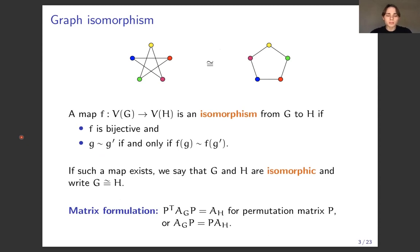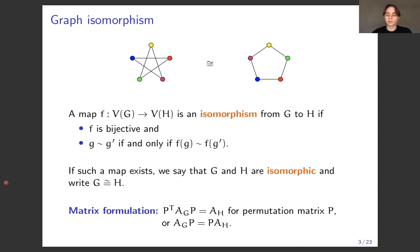We can also give a nice algebraic or matrix formulation for graph isomorphism in terms of the adjacency matrix of a graph. The adjacency matrix is a symmetric zero-one matrix where the UV entry is one if U and V are adjacent and zero otherwise. This matrix formulation says that two graphs are isomorphic if and only if you can find a permutation matrix P such that P^T A_G P = A_H, which equivalently can be written as A_G P = P A_H since P is unitary.